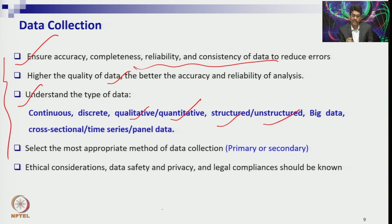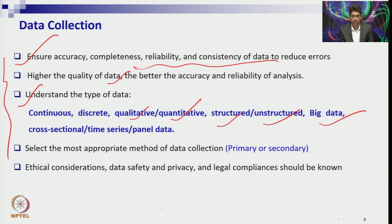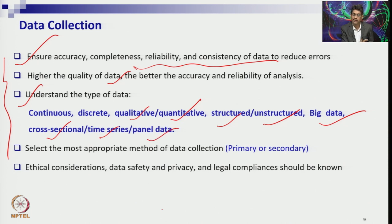Whether data are structured or unstructured is also very important in terms of data mining or machine learning. You need to understand whether the data is big data type or not — whether the 3Vs (volume, variety, velocity) are present. You also need to understand data patterns like cross-sectional data, time series data, and panel data. And you need to think about whether to collect data from primary or secondary sources.